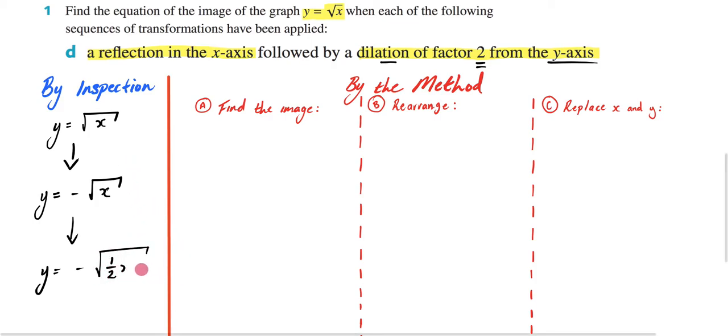Now you might be thinking to yourself, why isn't it just 2? If it's dilated by a factor of 2, why can't I just write a 2 there? Why is it a half? So if you are confused, don't worry. We're now going to go through this method, which is going to explain why.